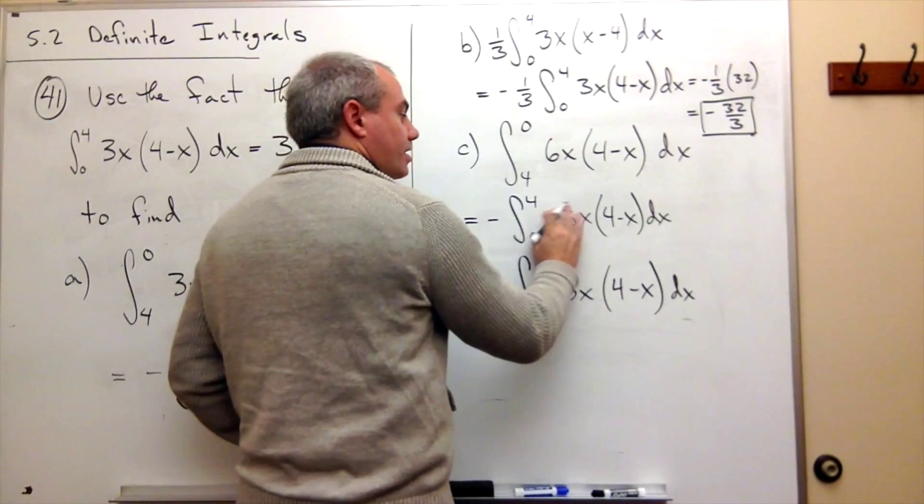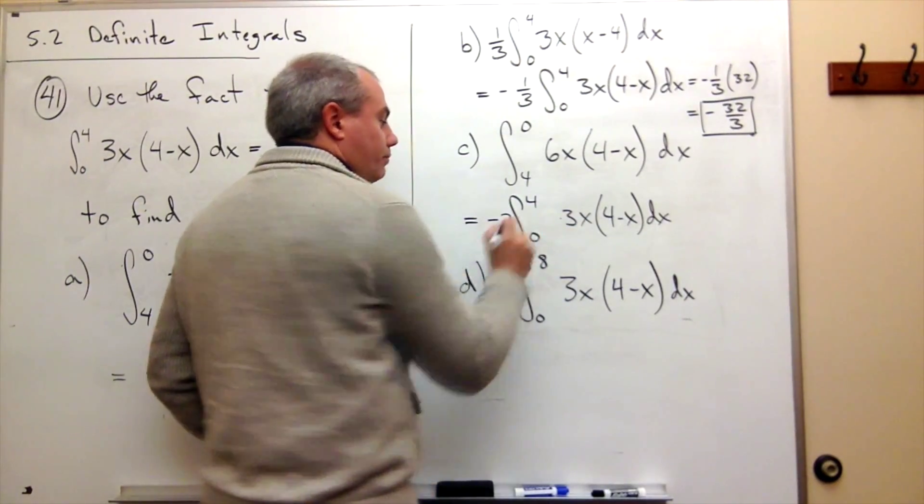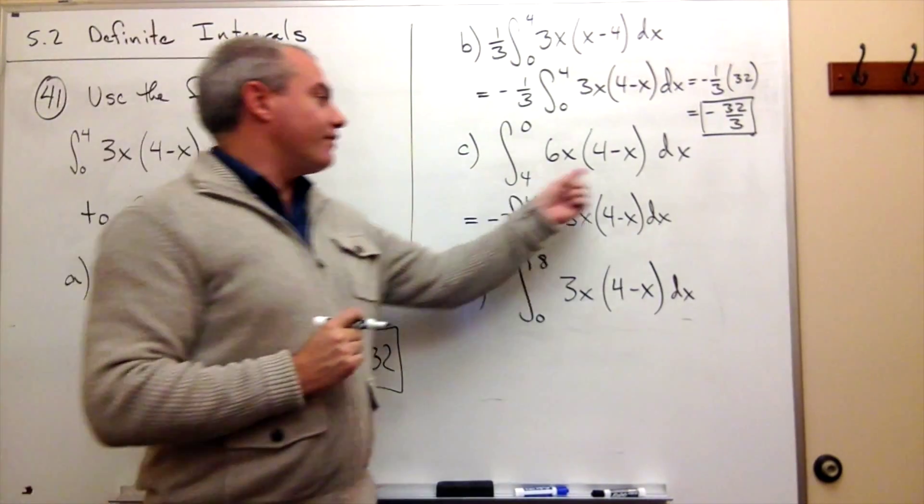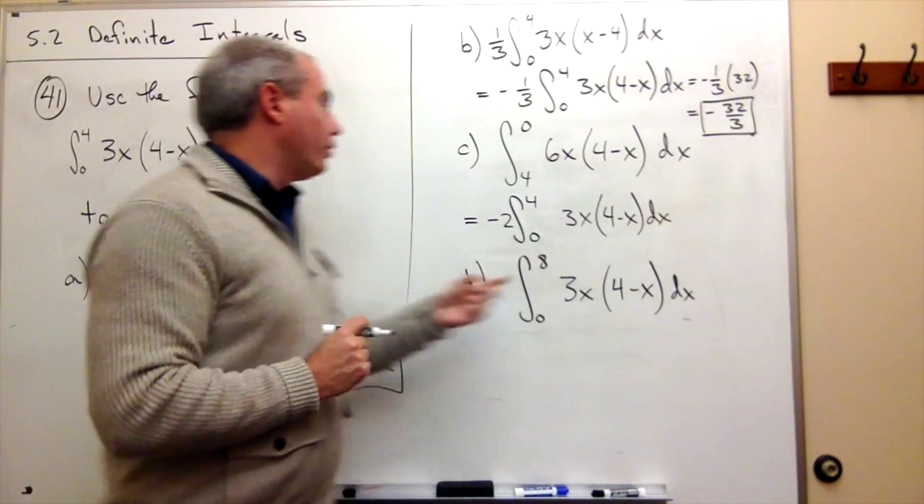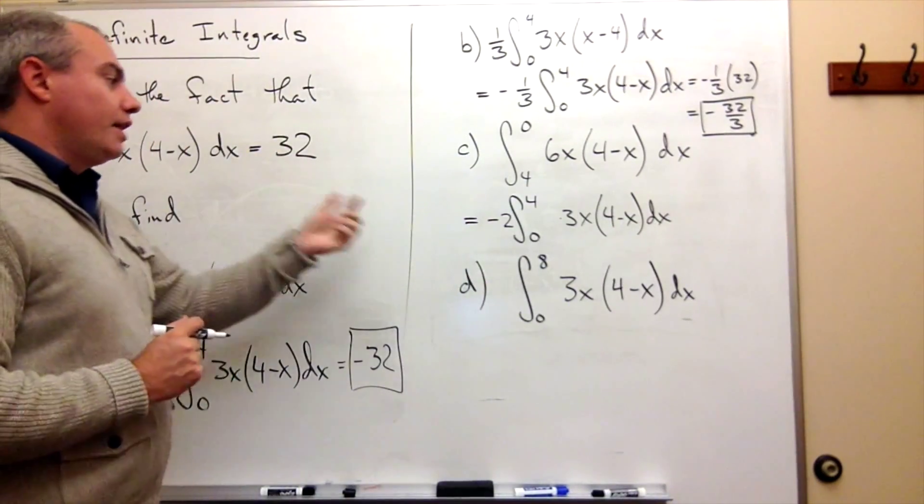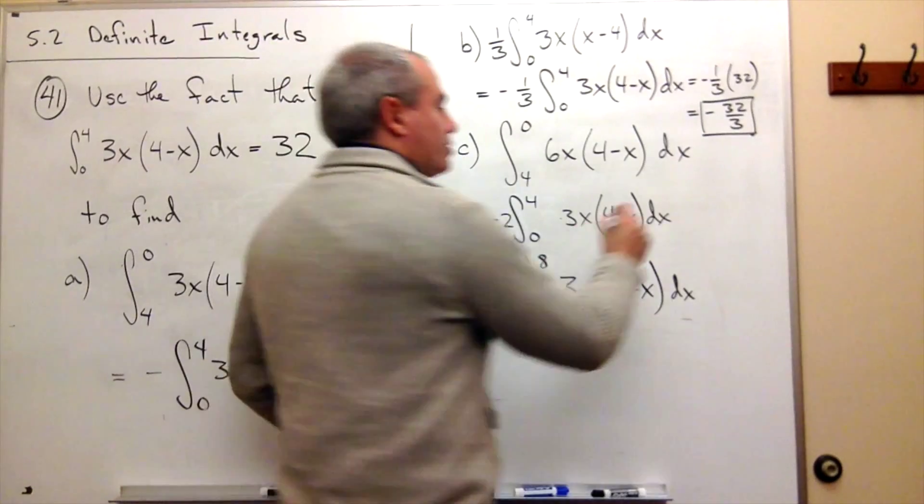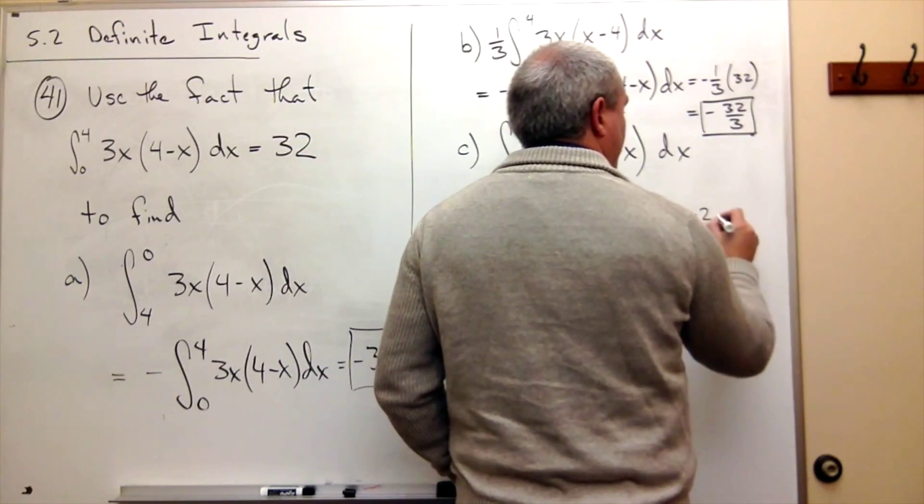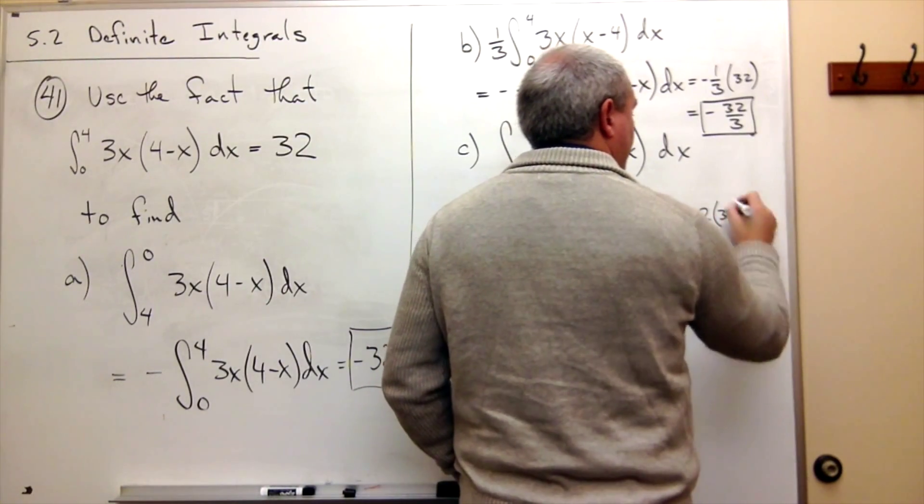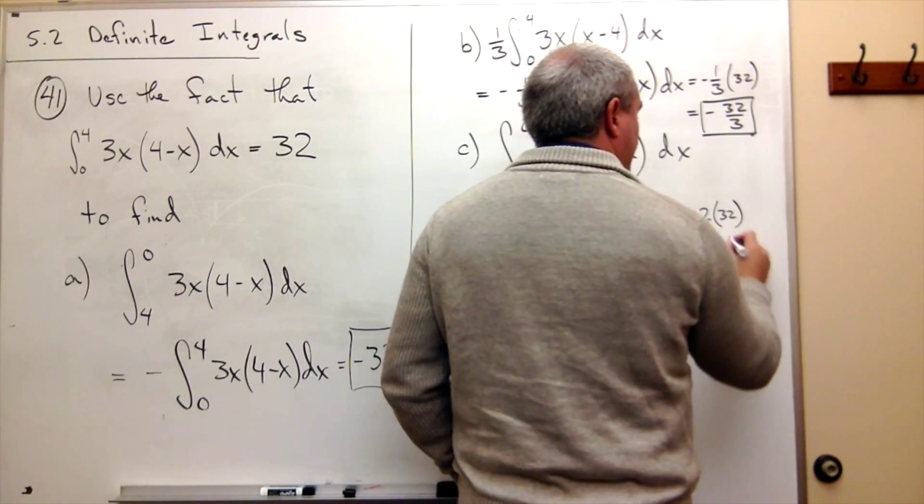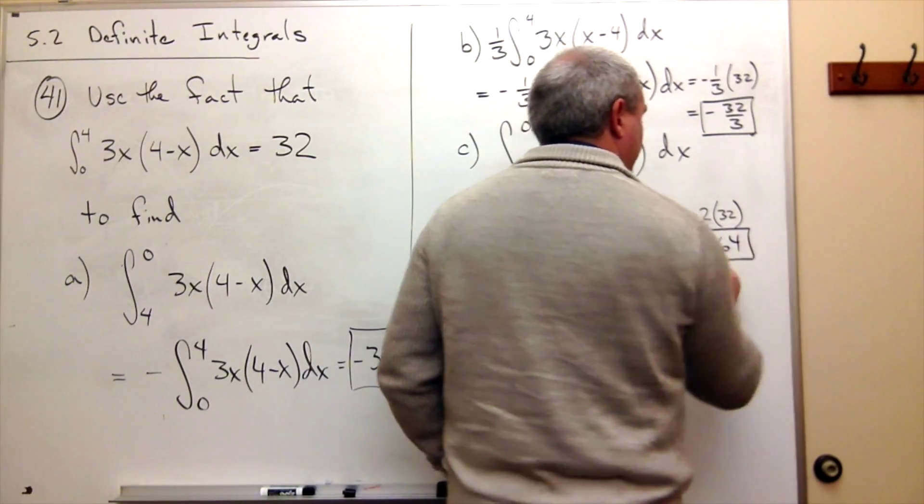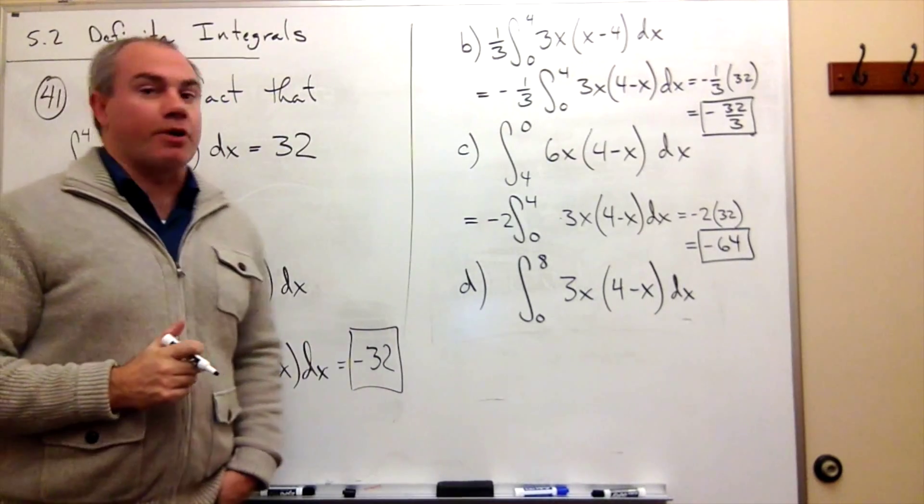But now I have exactly the integral that I know is 32 times negative 2. So I get negative 2 times 32, or if you prefer, negative 64. And that's my answer to part c.